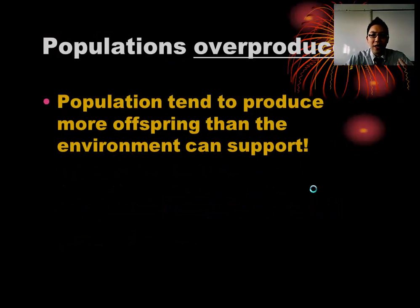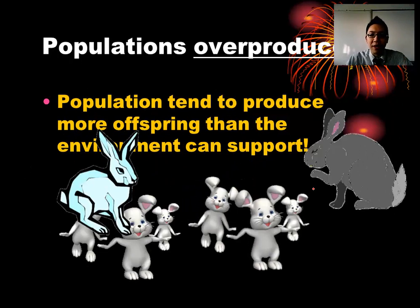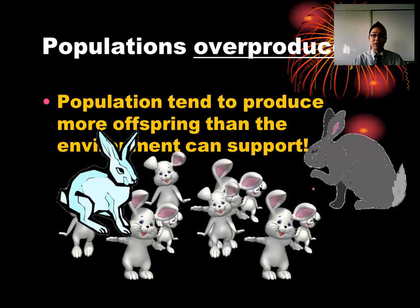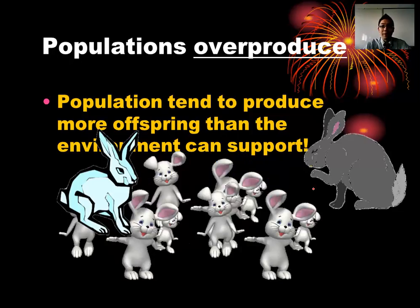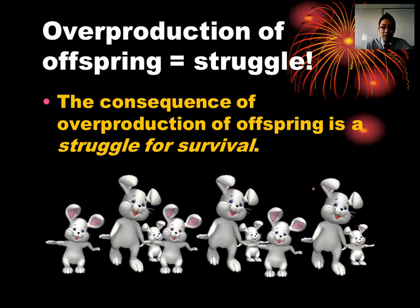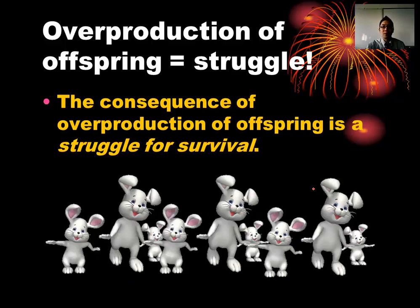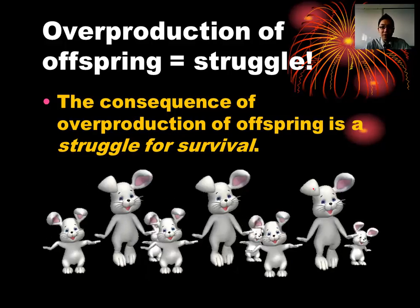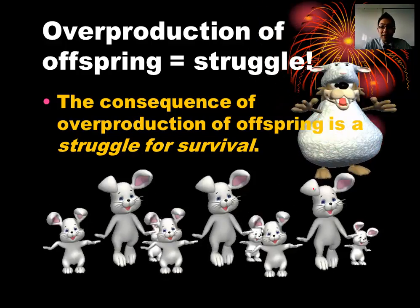A few things need to be true for evolution to happen. First, populations tend to overproduce — there tend to be more offspring than the environment can actually support. Even rabbits, which multiply rapidly, eventually reach a point where the environment can't support their numbers — shortage of food, not enough places to live. The consequence of overproduction is a struggle to survive. We see this with human populations and other organisms too.